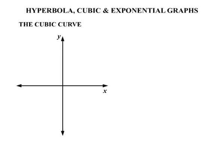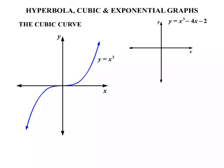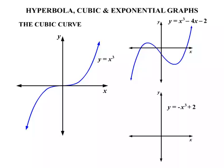We have our number plane there. Now y equals x cubed is the basic cubic curve and it looks like that. Other examples of cubic curves: y equals x cubed minus 4x minus 2 would look like that, and y equals minus x cubed plus 2 would look like that. Notice the negative x cubed is going in the opposite direction. So all of those are examples of the cubic curve. Notice that in their equation the x is being cubed - that's the highest power of x.